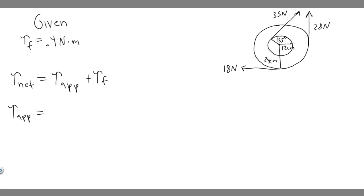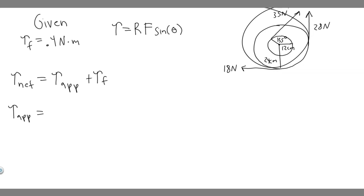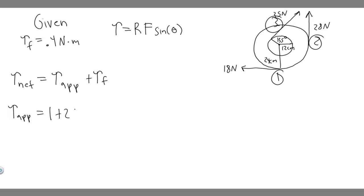To find the applied torque, we use the formula: torque equals radius times force times sine of theta. The applied torque is all the individual torques added up. I'll label the three forces one, two, and three, solve for each individually, and then sum them up.